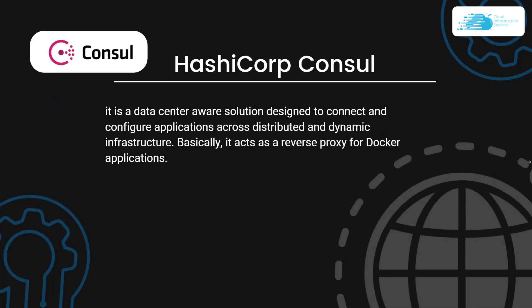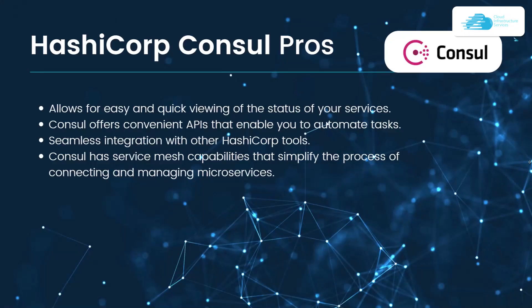Lastly at number 10 we have HashiCorp Consul. HashiCorp Consul is a data center-aware solution designed to connect and configure applications across distributed and dynamic infrastructure, acting as a reverse proxy for Docker applications. Consul's main features are service mesh, multi data center and health checking. Pros include easy and quick viewing of the status of your services, convenient APIs to automate tasks and seamless integration with other HashiCorp tools.